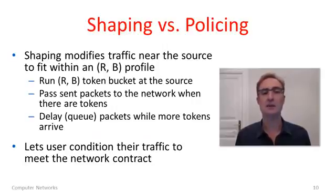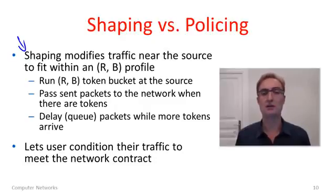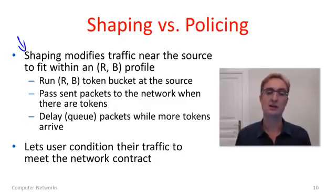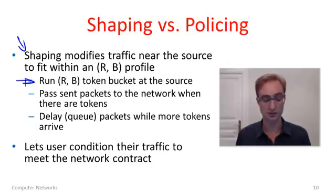A token bucket can be used in two different ways: for shaping or for policing. Shaping is about modifying the traffic near a source — the traffic that's injected into the network — to fit within an RB token bucket profile. The way we do it is by running the RB token bucket at the source.